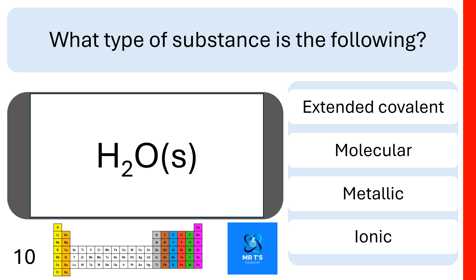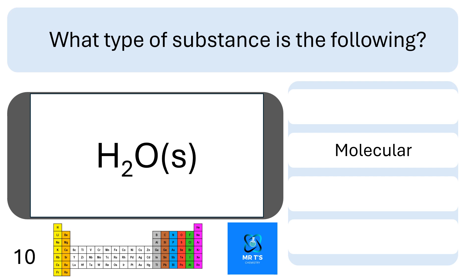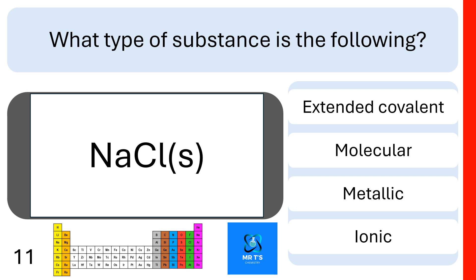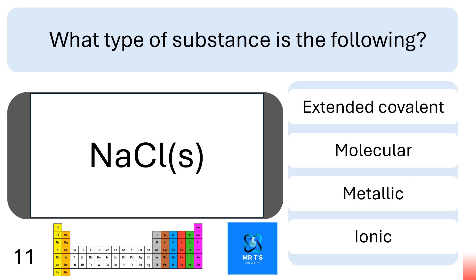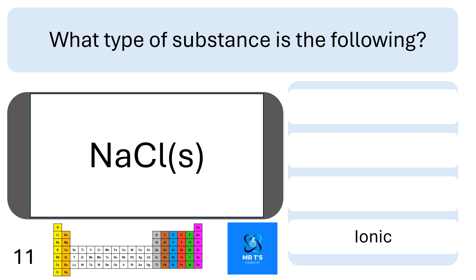Let's look now at types of substances. What type of substance is the following? This is H2O. Is it extended covalent, molecular, metallic, or ionic? This here is a molecular solid. Question 11. What type of substance is the following? Is the sodium chloride here extended covalent, molecular, metallic, or ionic? Good work if you said it was ionic.